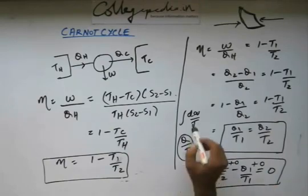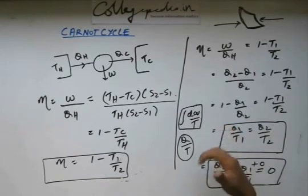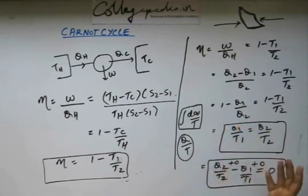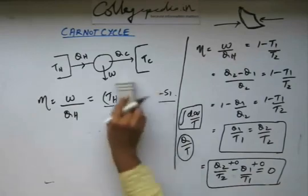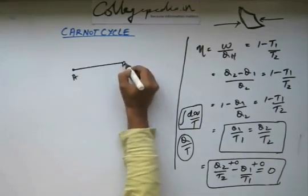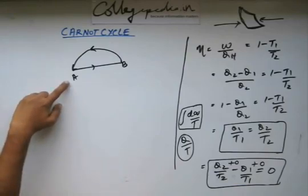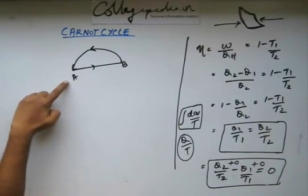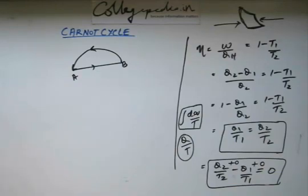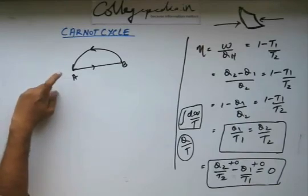This tells you that integral dQ by T is a state function. A state function is a function where, if you restore the state, the value of that function is the same as when you left that state. For example, internal energy is a state function — for an ideal gas it depends only on temperature. If you go from state A to B and come back through another path, the value of state functions will be restored to what they were before.